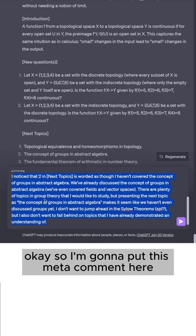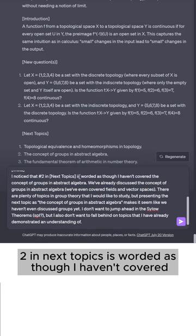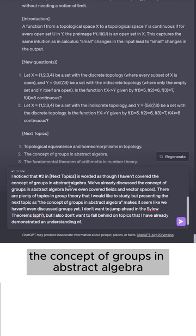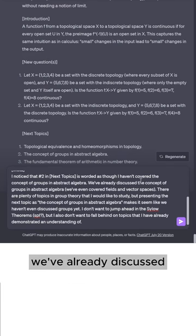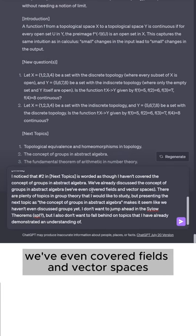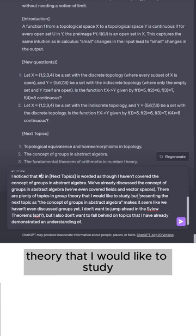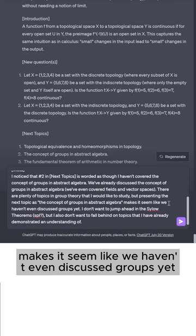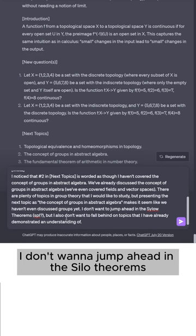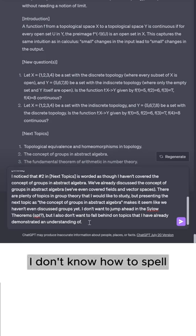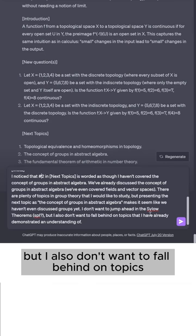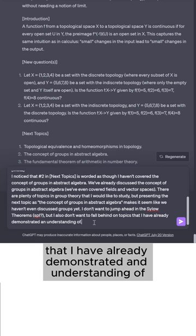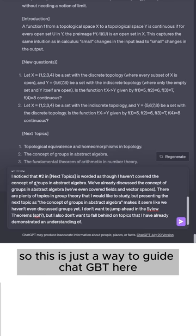Okay, so I'm going to put this meta comment here. I noticed that number two in next topics is worded as though I haven't covered the concept of groups in abstract algebra. We've already discussed the concept of groups in abstract algebra. We've even covered fields and vector spaces. There are plenty of topics in group theory that I would like to study, but presenting the next topic as the concept of groups in abstract algebra makes it seem like we haven't even discussed groups yet. I don't want to jump ahead in the silo theorems, which, by the way, I don't know how to spell, but I also don't want to fall behind on topics that I have already demonstrated an understanding of.